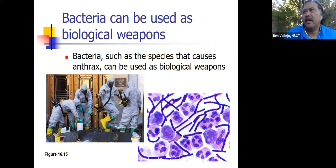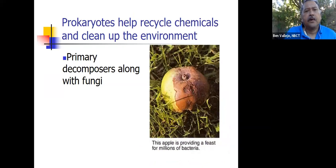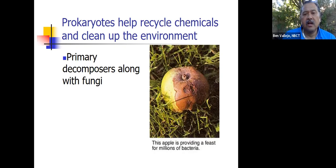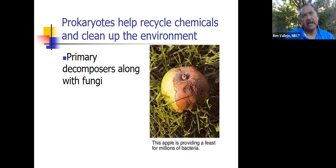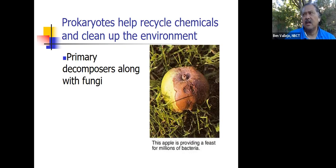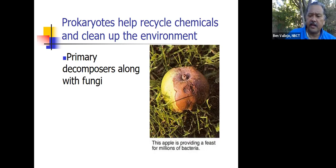Remember, you have access to all these slides in your learning management system, whether that's Canvas or Schoology. Prokaryotes help recycle chemicals and clean up the environment. Chemicals are recycled in ecological systems through biogeochemical cycles. When things die, they're broken down. Fungi — which includes mushrooms, yeast, and penicillin — are decomposers that break down things. As fungi break down something big like an apple into smaller pieces, bacteria come in and break those down into even microscopic pieces.